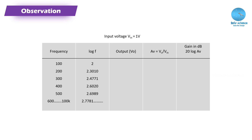AV is the gain, calculated as V0 by Vin. Then gain in decibel is calculated. This is the observation table with columns for frequency, output voltage, gain, and gain in decibel. The observation column calculations are explained.